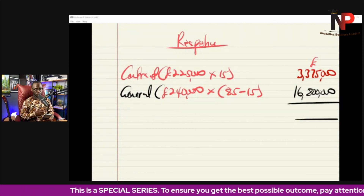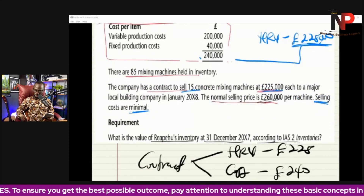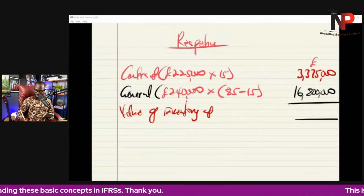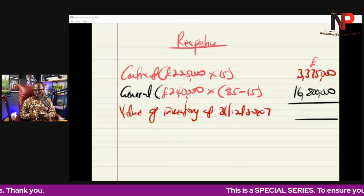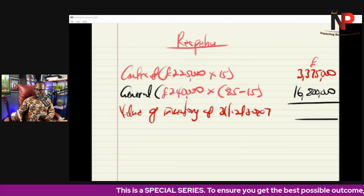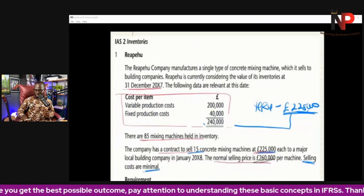Adding the two amounts together — the value of inventory at the reporting date of 31st December 20X7 is $3,375,000 plus $16,800,000 = $20,175,000. That is the answer to the question. That is basically the idea about IAS 2 Inventories — how we determine the valuation using the lower of cost and net realizable value.